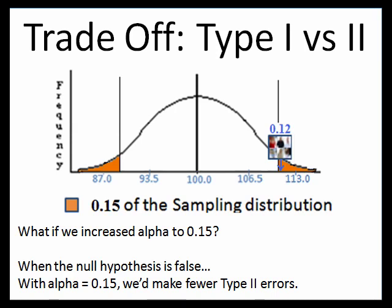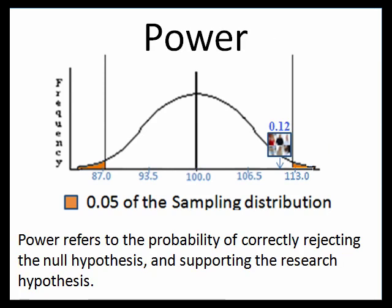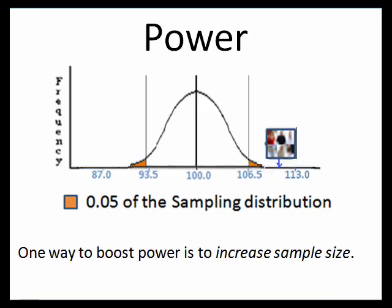The smaller your alpha — let's say we make alpha 0.01 — we're going to rarely ever reject the null hypothesis when we shouldn't. But that also means your treatment had better be incredibly powerful; it's got to have a huge impact to get your sample mean way out there so that you'll reject the null hypothesis. So again, power refers to the probability of correctly rejecting the null hypothesis and supporting the research hypothesis. How can we increase power? We talked about changing alpha — if you increase your alpha, it takes less evidence to show that your treatment had an impact.